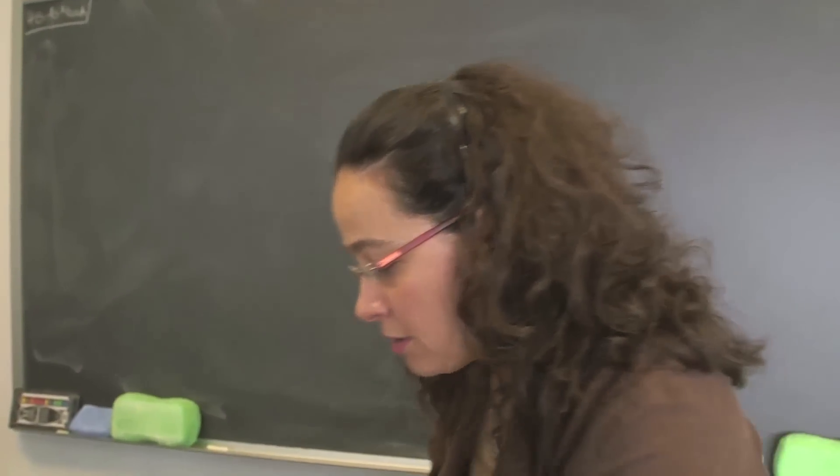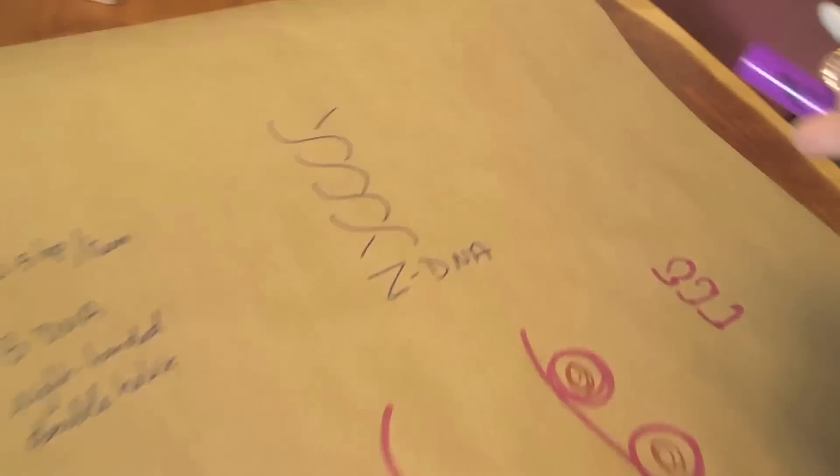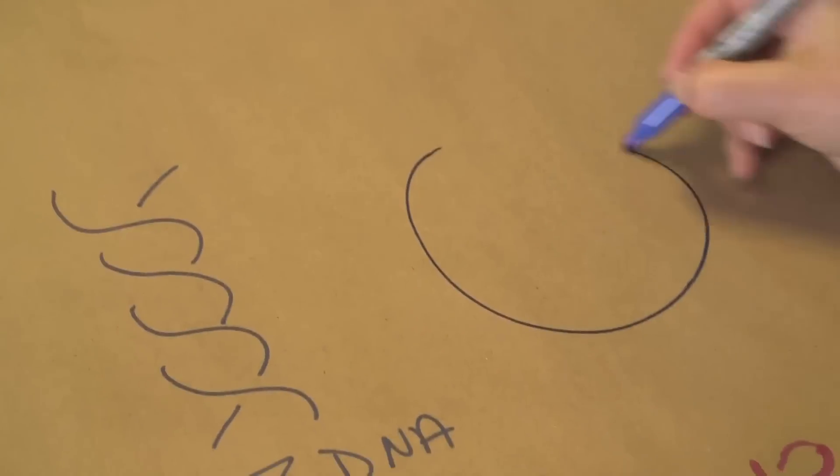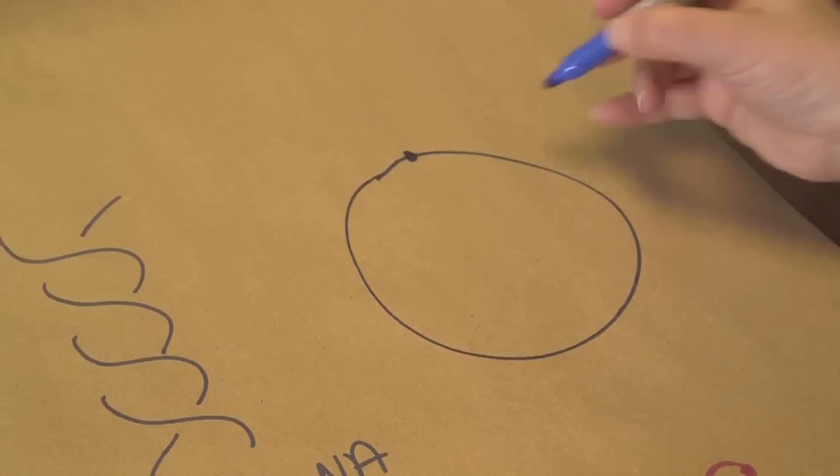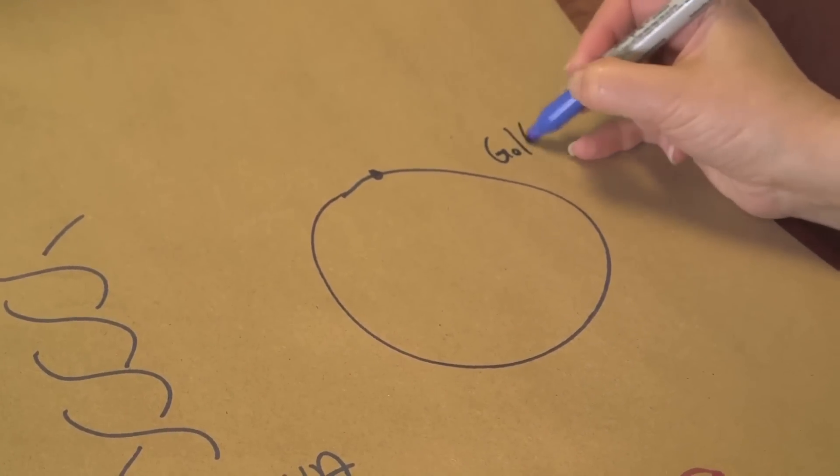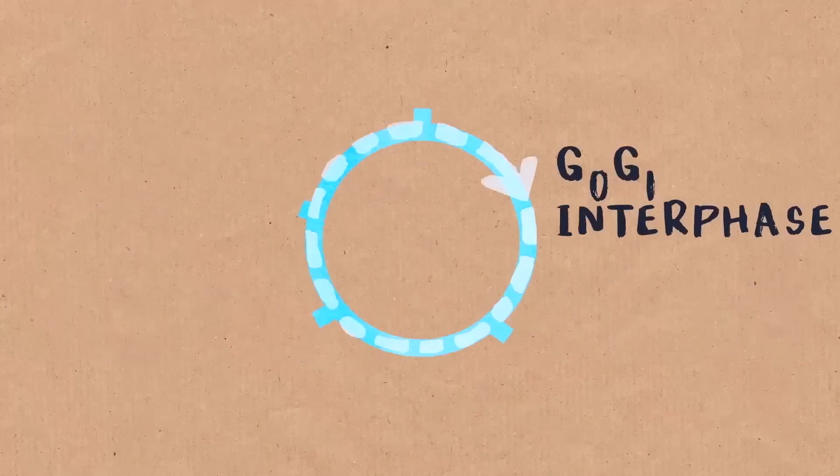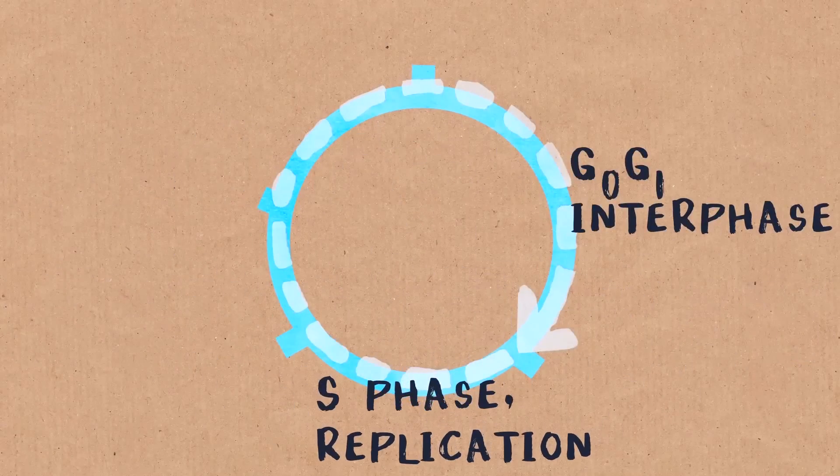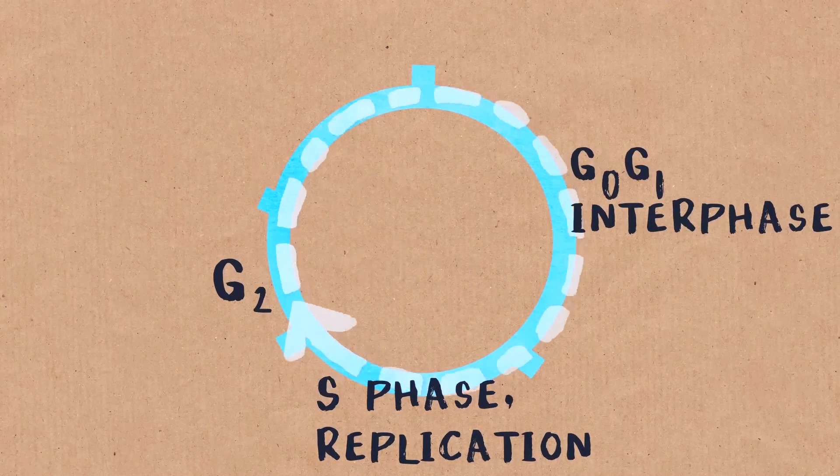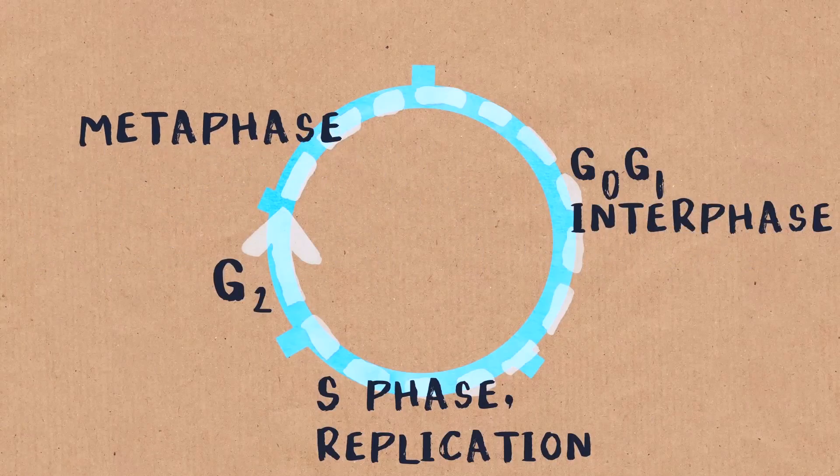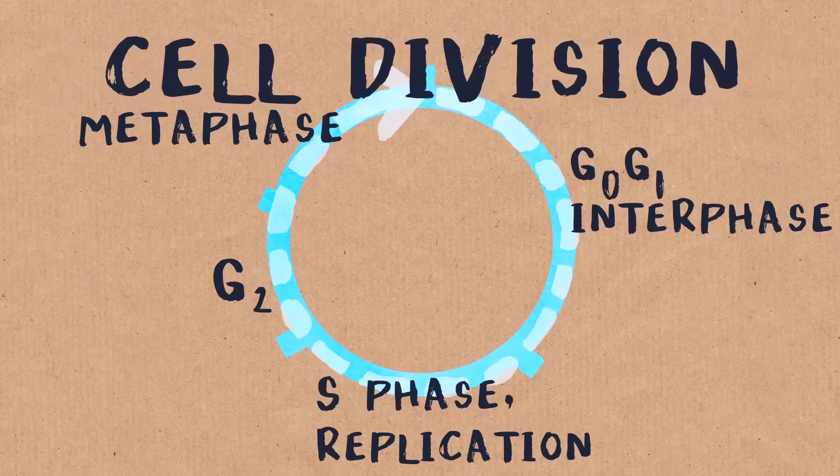But at the first stage of the cell cycle, if we consider the cell cycle as starting here, this is what we call the G0-G1 phase of the cell cycle or interphase. Then there is the S phase where replication takes place. There is G2 and the metaphase. And right here we will have cell division.